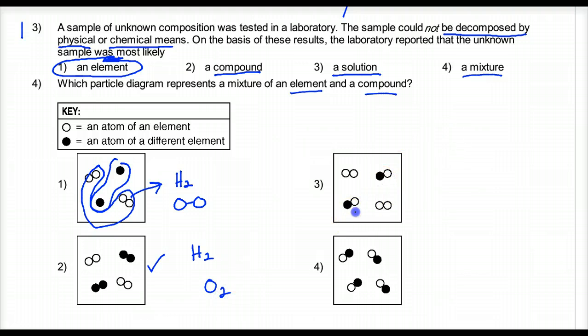Same reason for 2, that's a mixture of two different elements. Now, here is a compound, one compound, because it has two different atoms chemically bonded. The smallest part of a compound is a molecule. And here we have an element, a diatomic element. That's your answer. 4 doesn't make any sense because it's just one compound. So 3 is the answer.